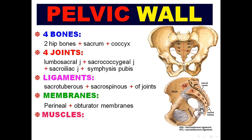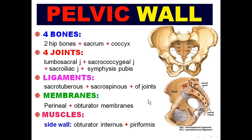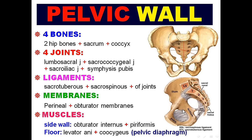We have membranes: the obturator membrane closing the obturator foramen, and the perineal membrane closing the subpubic space. And then we have four muscles: two on the side wall of the pelvis — piriformis and obturator internus — and two in the pelvic floor — levator ani and coccygeus — called the pelvic diaphragm.